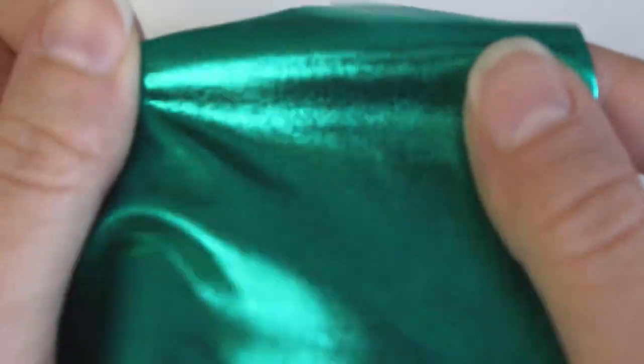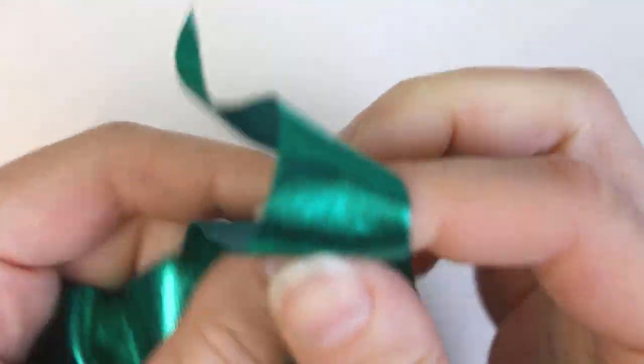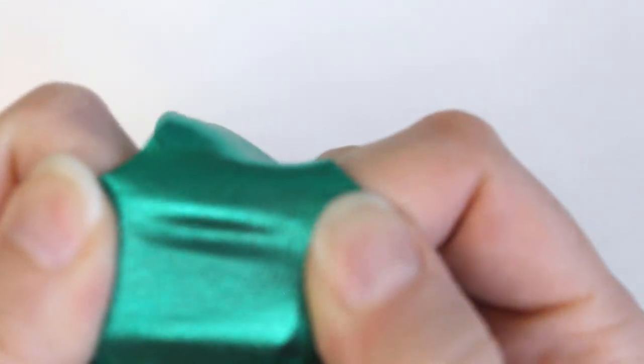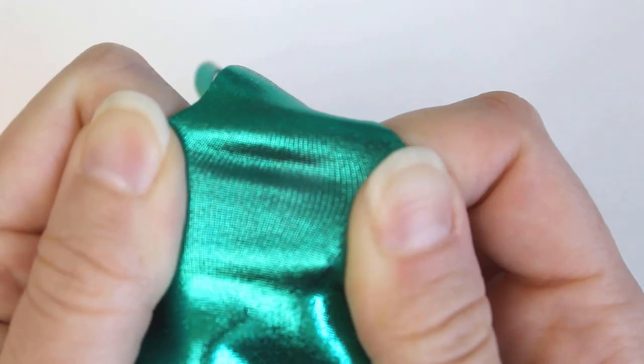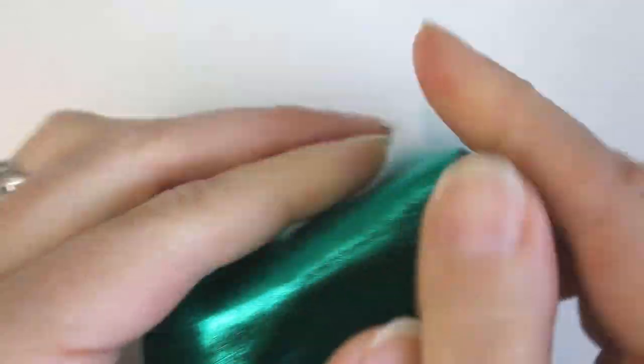Sometimes knits have additives like lycra or spandex that can help them stretch farther. This spandex fabric has a shiny vinyl coating on top, but since it still stretches and the primary purpose of the fabric is the stretch, this is still classified primarily as a knit instead of a nonwoven.